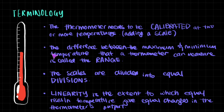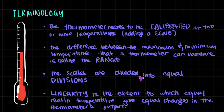Then we have the range. The difference between the maximum and minimum temperature that a thermometer can measure is called the range — it's just maximum minus minimum. If you have a wide range, you can measure temperatures from very low all the way up to very high. A narrow range means you can only measure within a limited span. The scales are divided into equal divisions — one degree Celsius is one division, and between zero and 100 degrees Celsius there are 100 divisions.